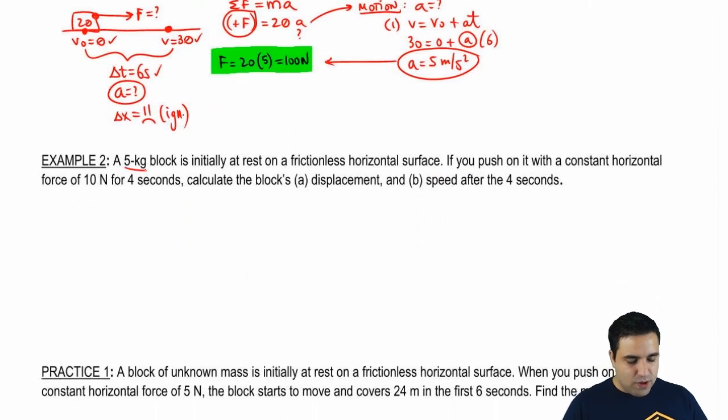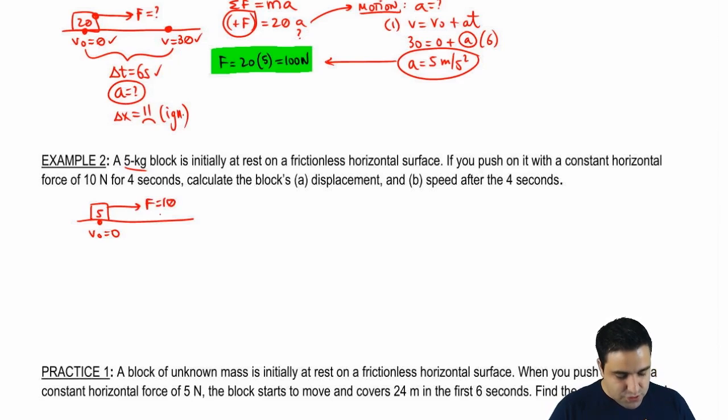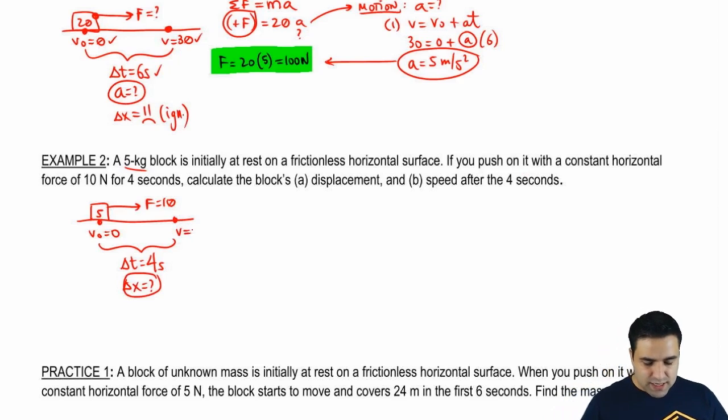A five-kilogram block is initially at rest on a frictionless horizontal surface. So here's a five-kilogram block. It's initially at rest. So the initial velocity here is zero. And you push on it with a constant force of 10. And you do this for four seconds. So I can draw a little interval here and say that this takes a time of four seconds. And I want to know the block's displacement and the block's speed after four seconds. But let's do one at a time.